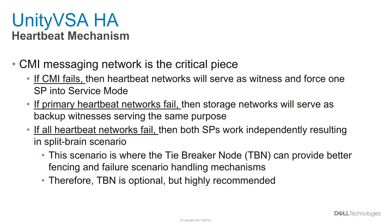Since the CMI network is the SP communication channel for proper function of the Unity VSA HA solution, there needs to be a fail safe in case the CMI network goes offline. This is where the heartbeat networks come into play. If the CMI network fails, the heartbeat networks will serve as a witness and force one of the SPs to go into service mode. If both SPs continued running without the CMI, both would believe they are the primary SP and try to take over storage functions — this is called a split-brain scenario and could lead to data corruption. Therefore, the heartbeat mechanism is useful in ensuring continued data availability.